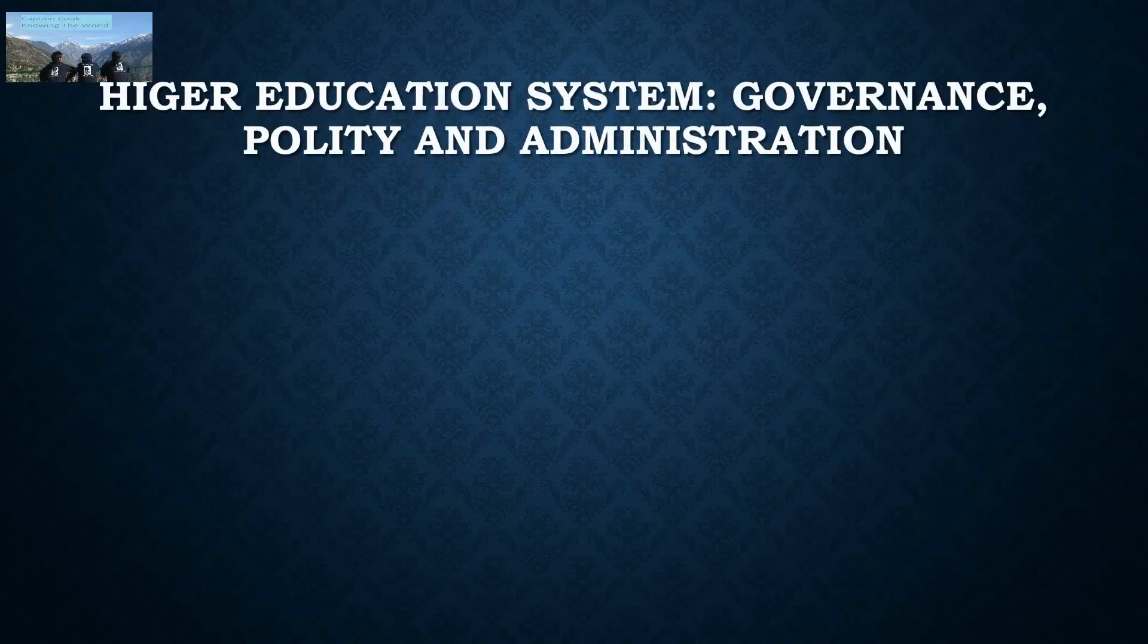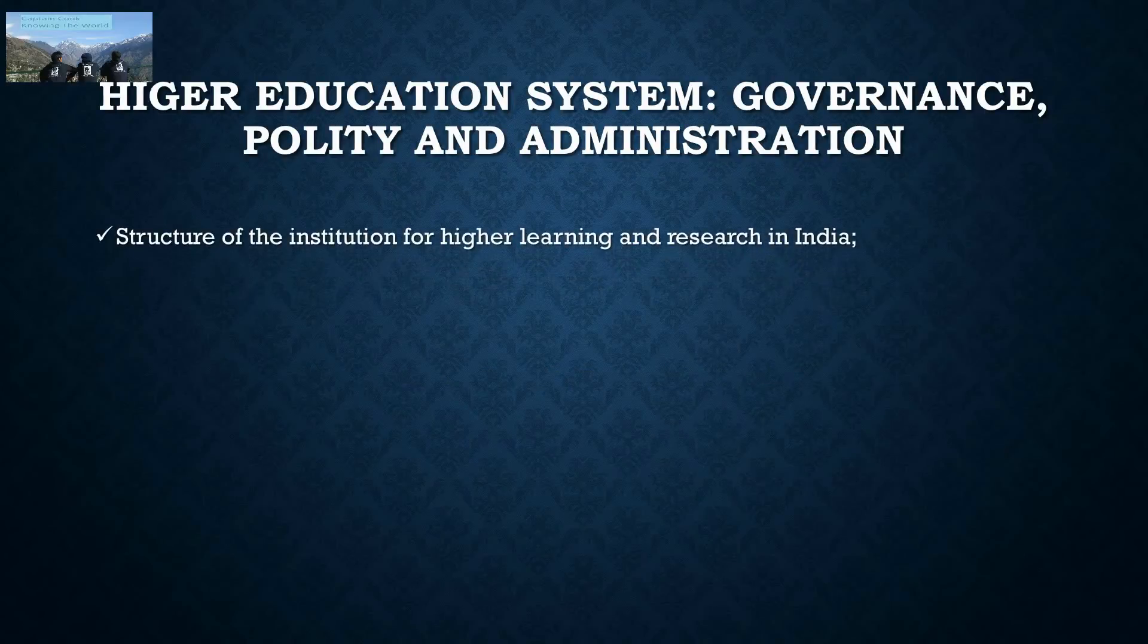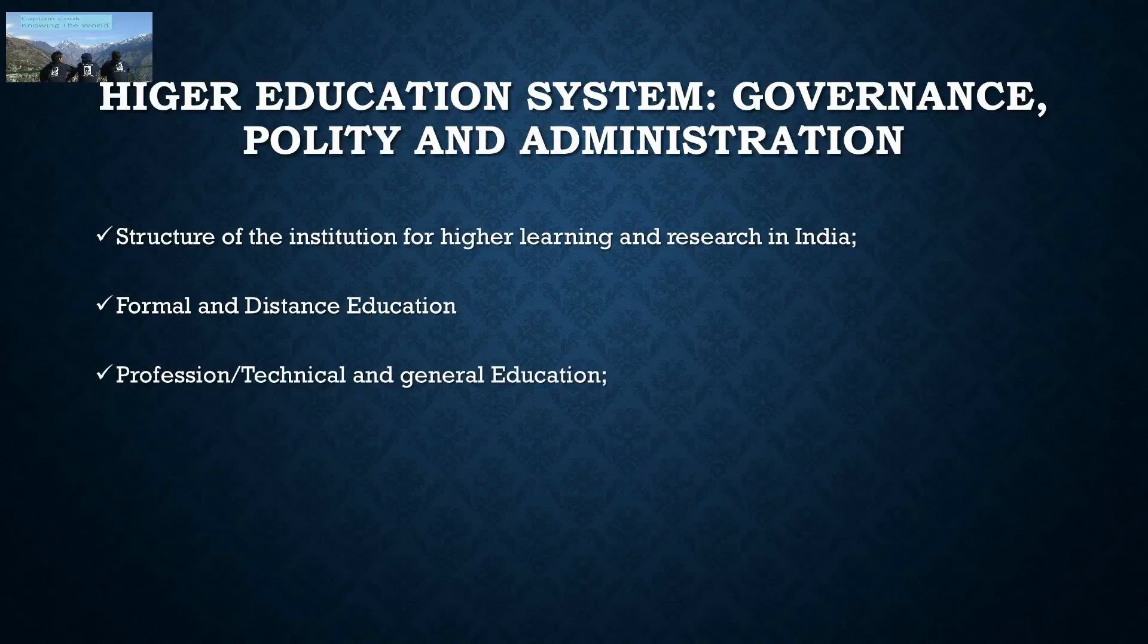Higher education system includes governance, polity, and administration. This is the main thing where these things are tested. The structure of institutions for higher learning and research in India—you should know about it because in the coming time you'll be an assistant professor. Formal and distance learning, what is distance learning and formal learning, along with professional and technical teaching, general education about it.